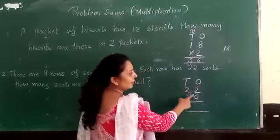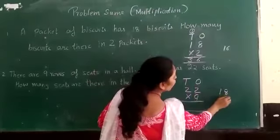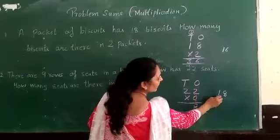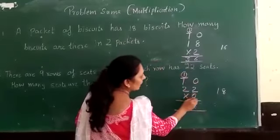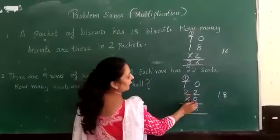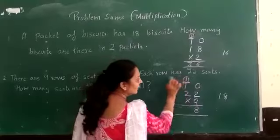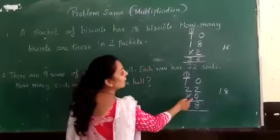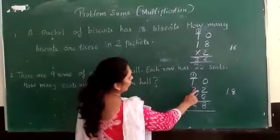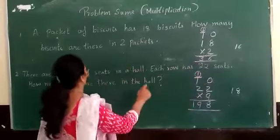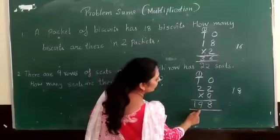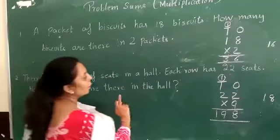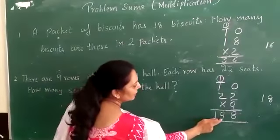2 times 9 is 18 — we write 8 and carry 1. Then 2 times 9 is 18, plus 1 carried is 19. So 22 multiplied by 9 equals 198. There are 198 seeds in the hole.